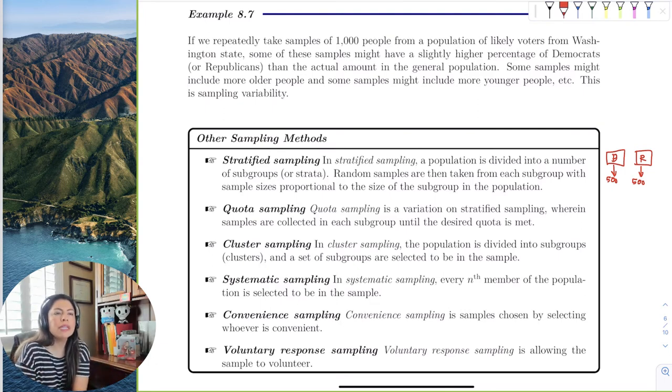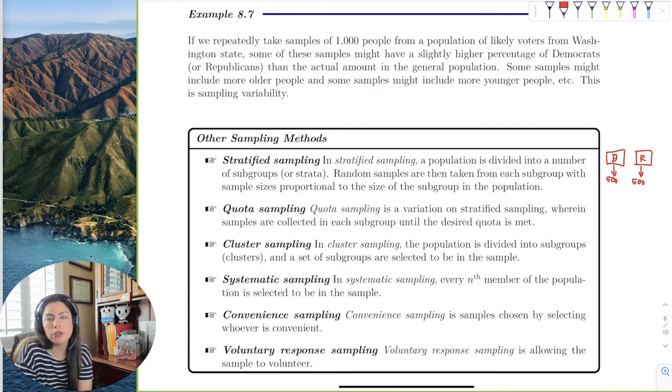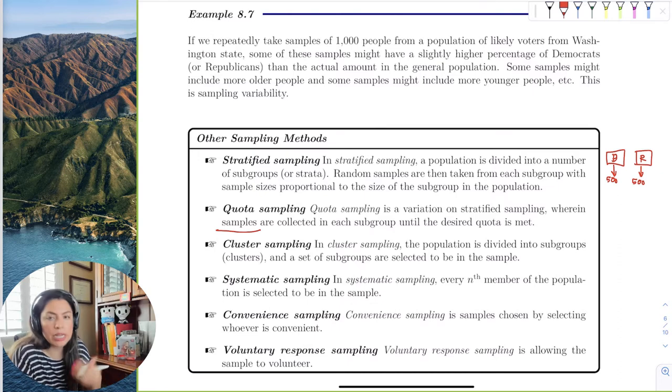Quota sampling is exactly stratified, but let's just say you don't have 500 Republicans in your sample, like in your whole population that you're grabbing hats from. Let's say you don't have 500 and you have 400. Then you take the 400 and the 600 and then you just use proportions in your analysis. So quota sampling is just taking samples in each group until it's met. You just take whatever you can get, right? So this is just when you're going to meet a certain quota.